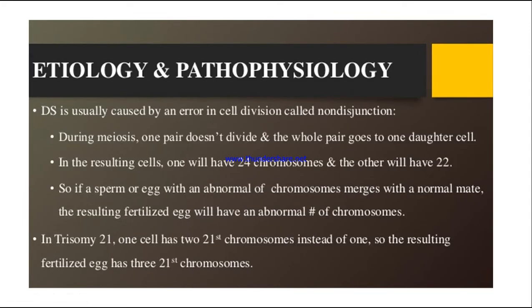Down syndrome is usually caused by an error in cell division called non-disjunction. This is the cause of the extra genetic material. During meiosis, one pair of chromosomes does not divide and the whole pair goes into the daughter cell.